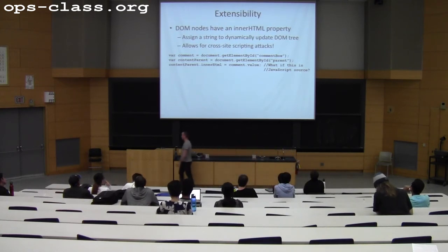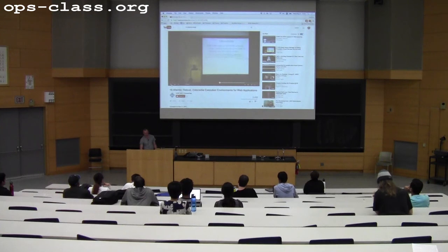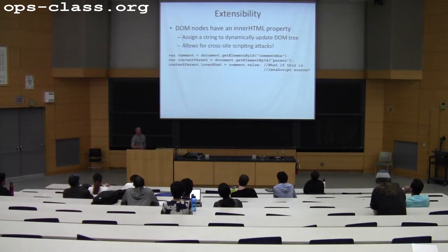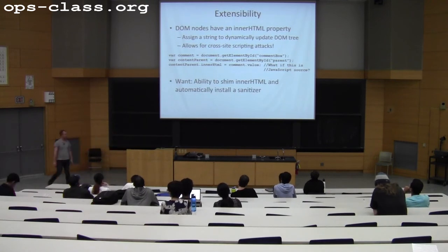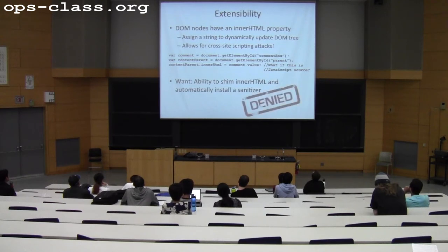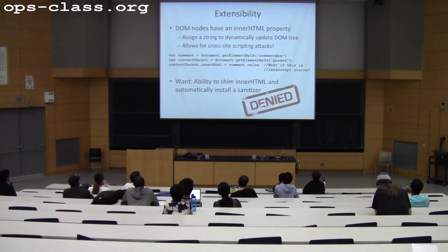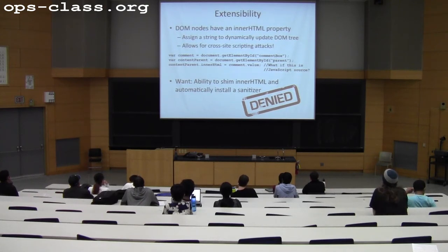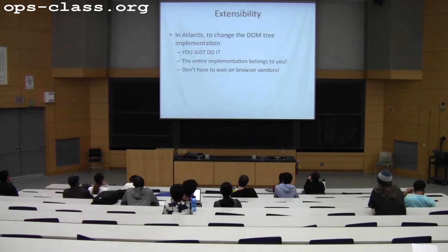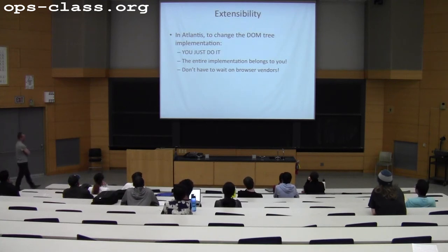James will talk about how to use Atlantis to avoid XSS. This is a developer mistake, but you might want your web browser to fix this automatically. With Atlantis, the DOM tree implementation belongs to you — so you can specify that this version of the DOM tree does not allow innerHTML to be set to or executed as JavaScript. If you realize people are exploiting this vulnerability, you don't have to wait for developers to fix their web pages. You can just fix the web stack and all pages using that runtime benefit at once.